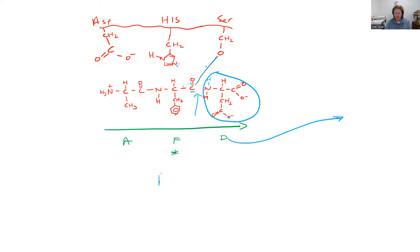So we've taken the peptide A-F-D and we've cut it. We've released D. We still have A and F, but that A and F are covalently linked to our enzyme.